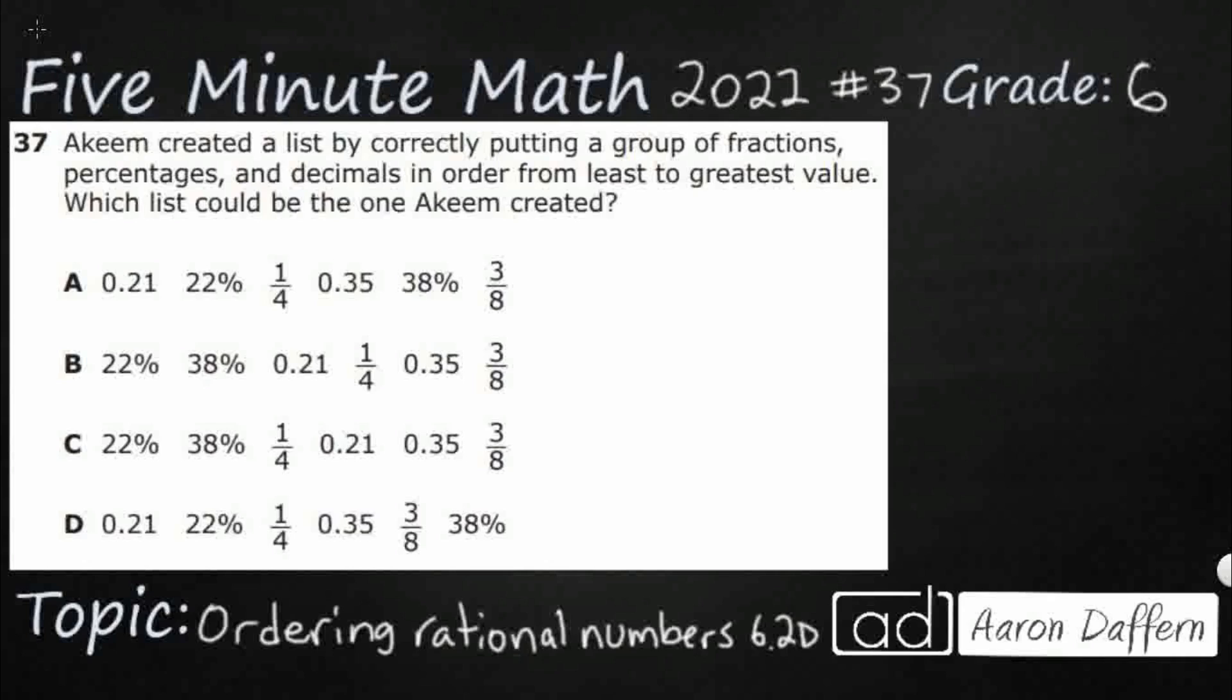So, Akeem is creating a list, putting fractions, percentages, and decimals in order. Here we go. Least to greatest. So, the problem with his list is that Akeem has got all three of these. We've got fractions, we've got percentages, and decimals.